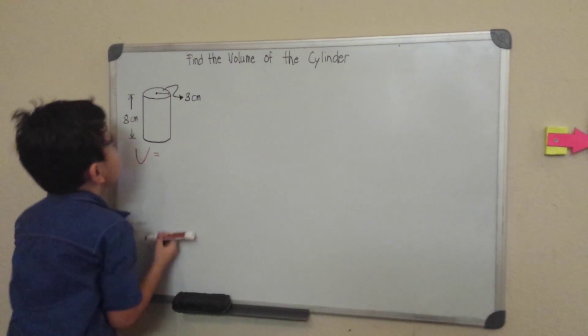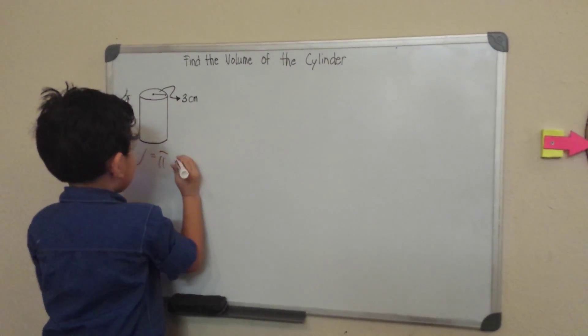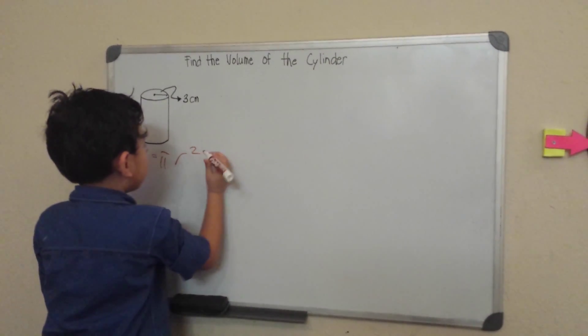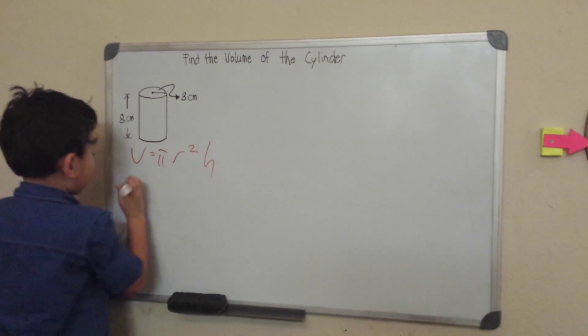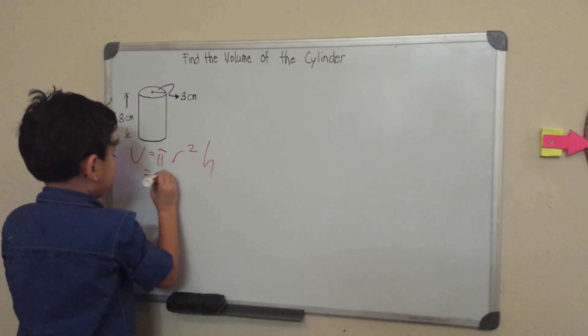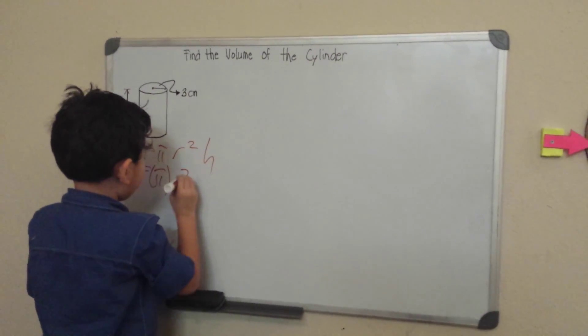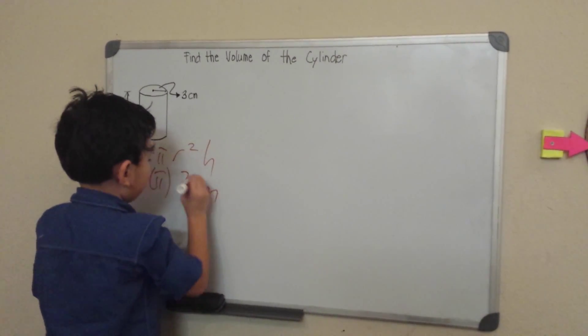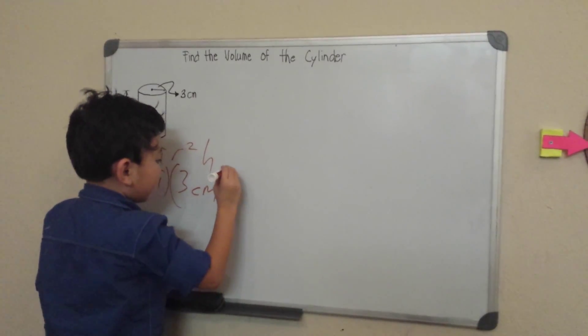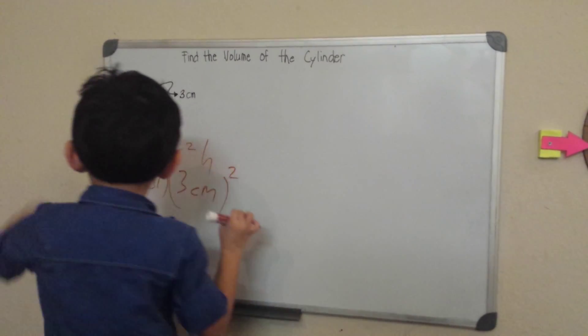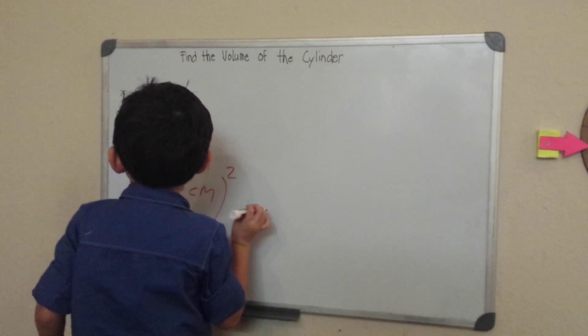So volume is equal to pi times the r squared times the height. Then we get a pi. Then our r, which is 3cm squared, and a height of 8cm.